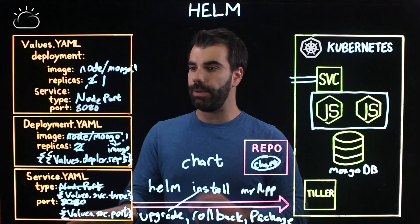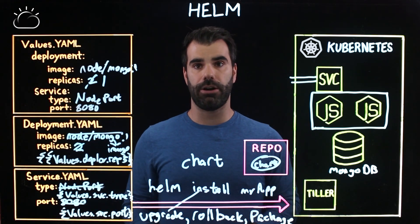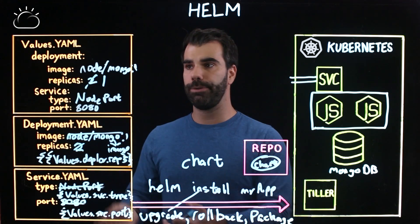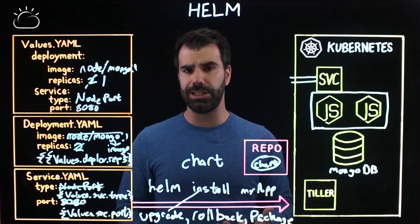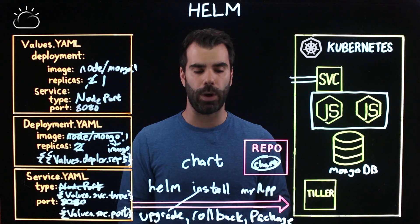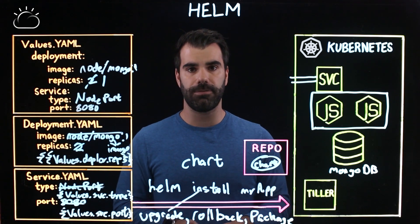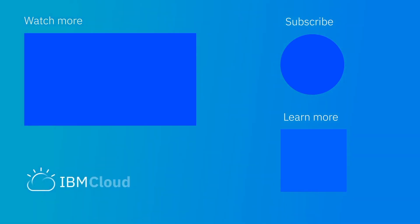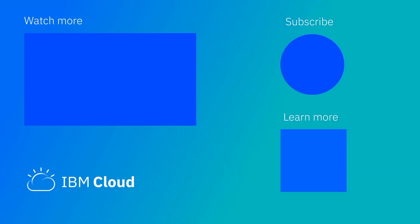What we've discussed is taking a typical scenario, going through it by hard-coding your YAML, and then by parametrizing it with Helm, making it a little bit easier to manage these packages, upgrade them when you need to, and make it easier for everyone else on your team to understand. It's currently in the incubation phase of the Cloud Native Computing Foundation, and it's ready for open source and ready for you to use today. If you have questions, please drop us a line below. Please like and subscribe, and you can always get started on the cloud at no cost by signing up for a free IBM Cloud account.